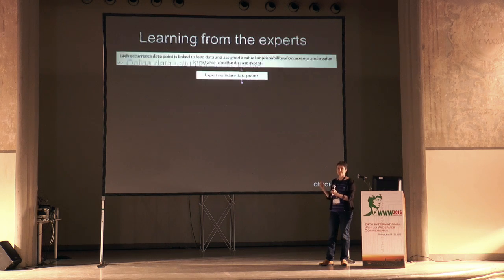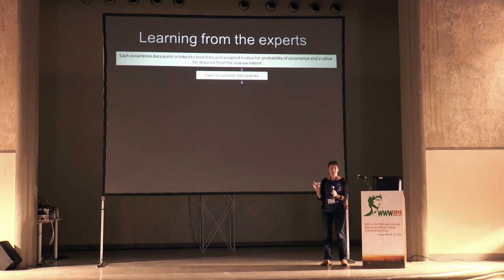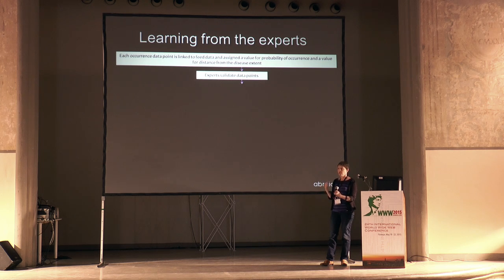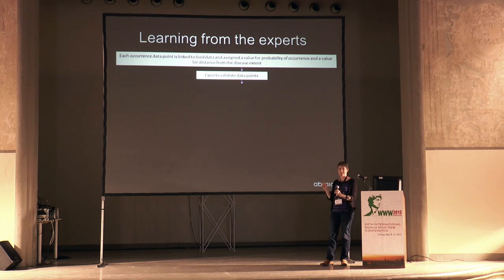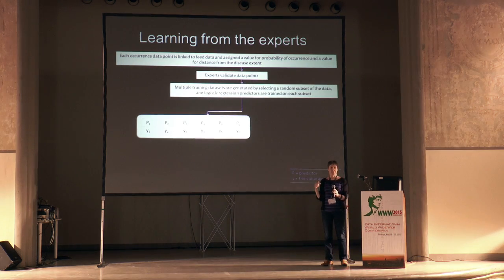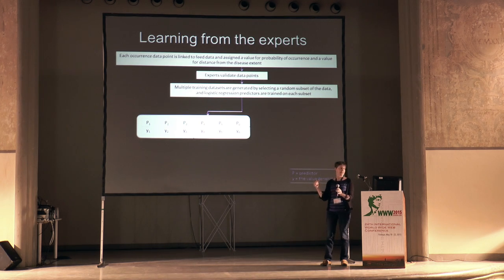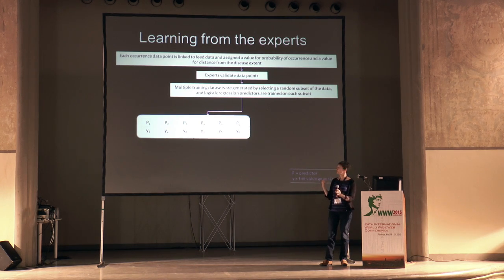Once we have a training data set from the experts, each data point is also assigned three more values: one is the feed or data source, one is the current probability of disease occurrence at that location, and the third is the distance of that location from the current disease extent.